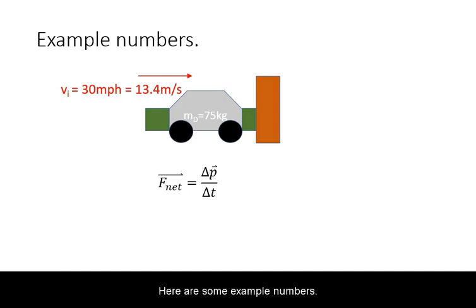Here are some example numbers. Suppose the collision happens with an initial velocity of 30 miles per hour. This is equivalent to 13.4 meters per second.